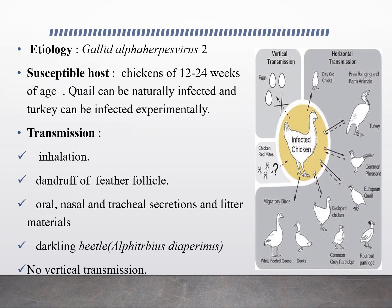Etiology: the causative agent is Gallid alphaherpesvirus 2. Regarding susceptible hosts, chickens are the most important natural hosts, at the age of 12 to 24 weeks. Quail has also been found to suffer from this disease, mostly in the ocular type, and experimental production of the disease in quail and turkey has also been reported.